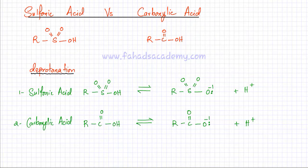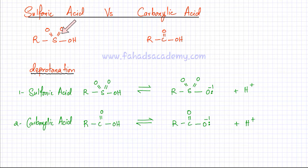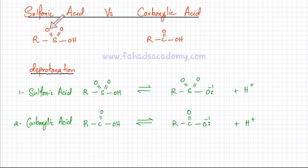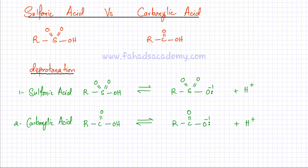In this lecture we're going to discuss sulfonic acid. It has a particular group where sulfur is bonded to oxygen — it forms double bonds with both oxygen atoms — and there's a hydroxy group bonded on one side. This over here is the rest of the molecule.